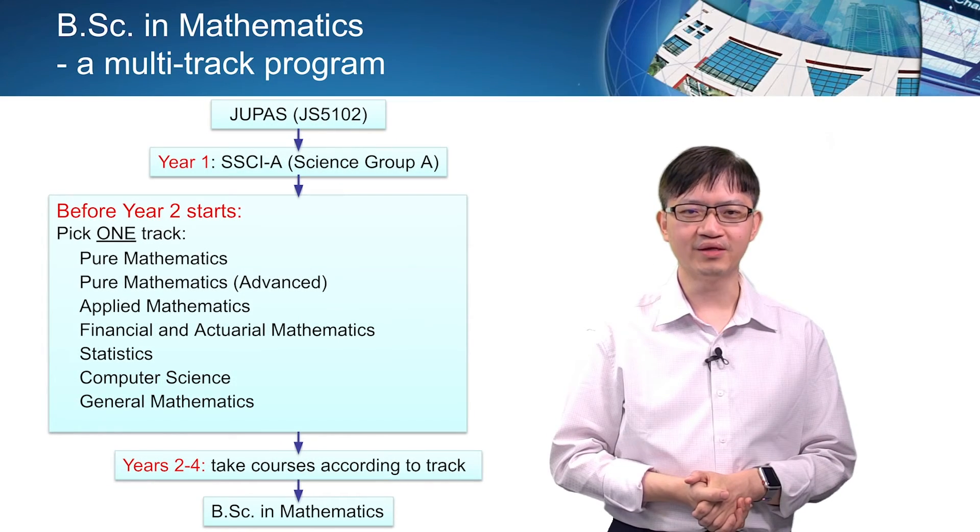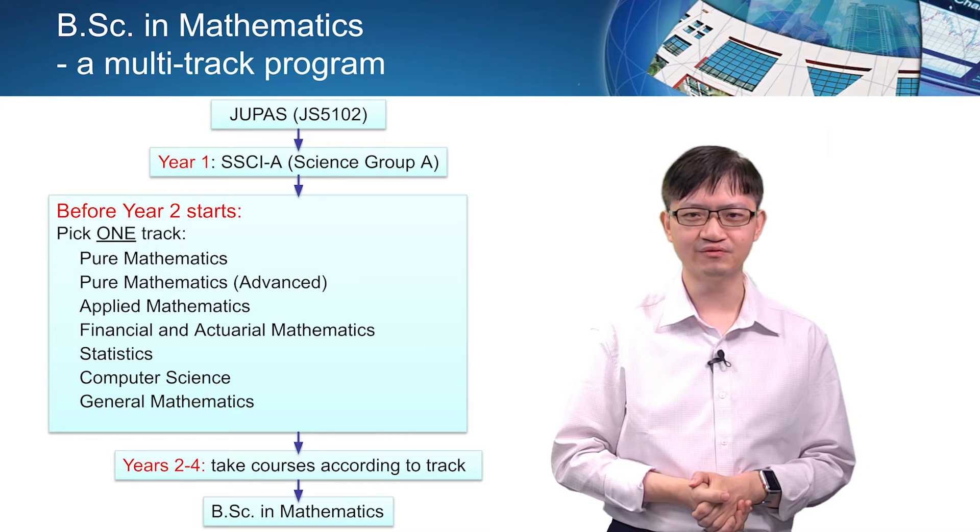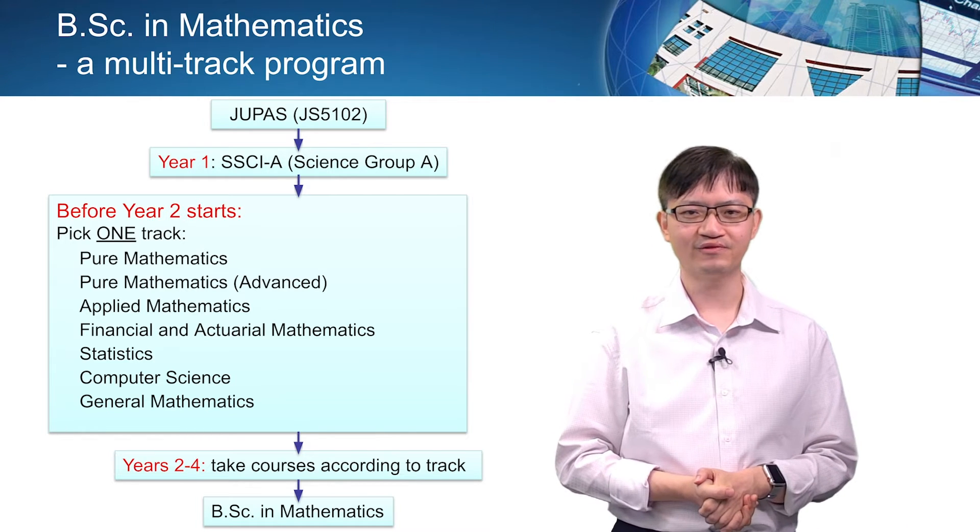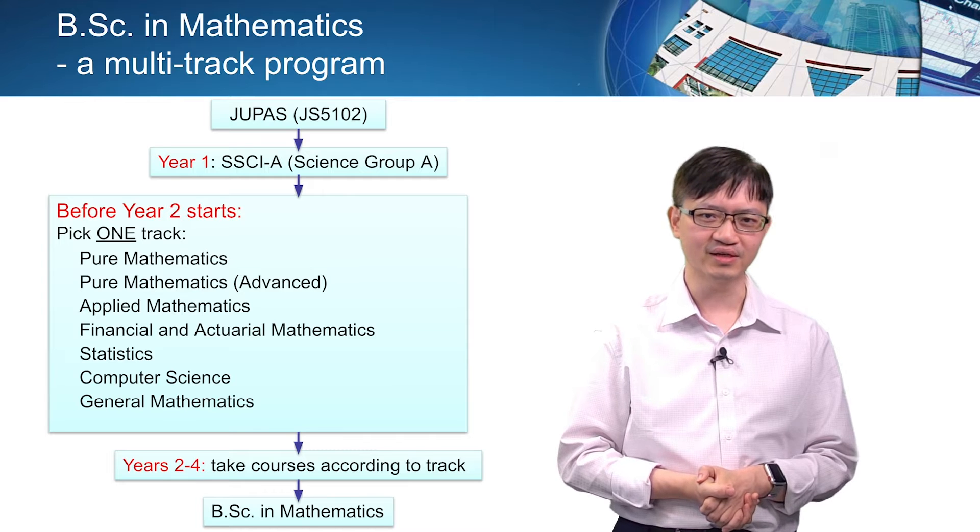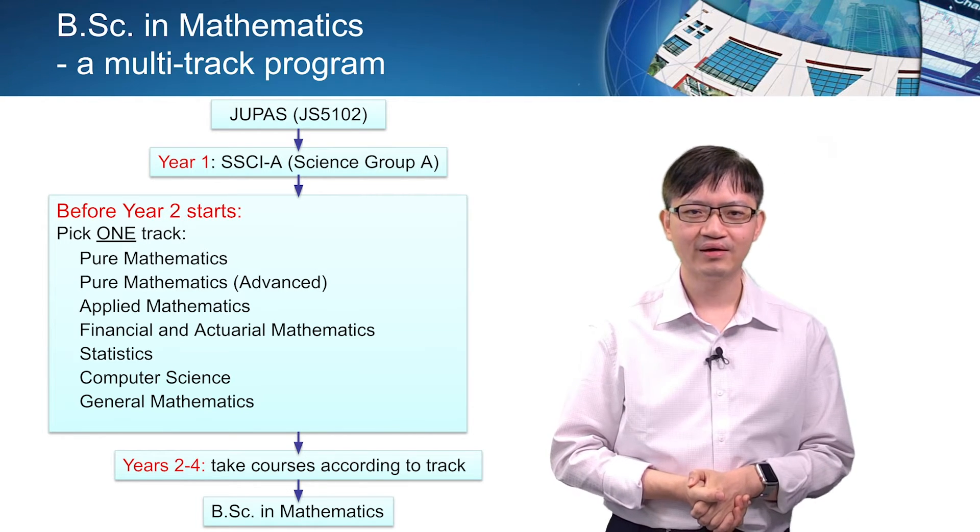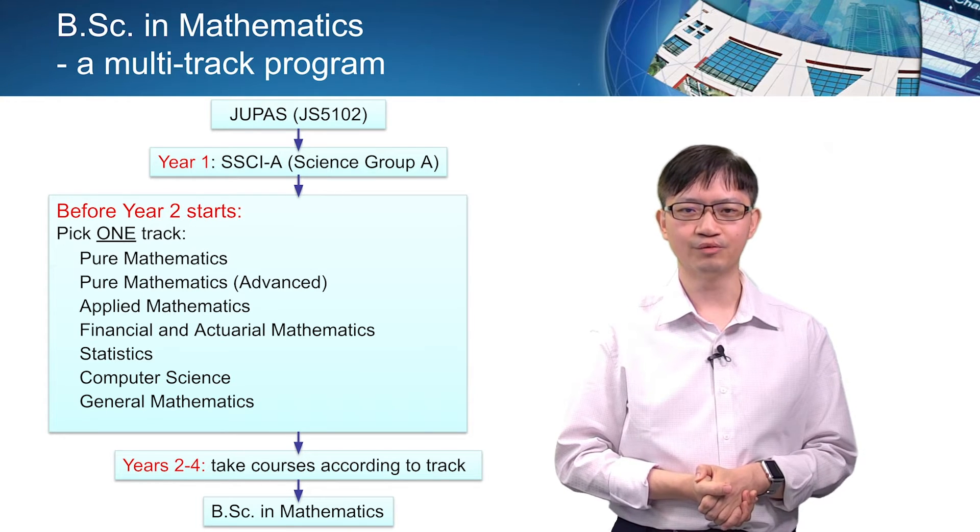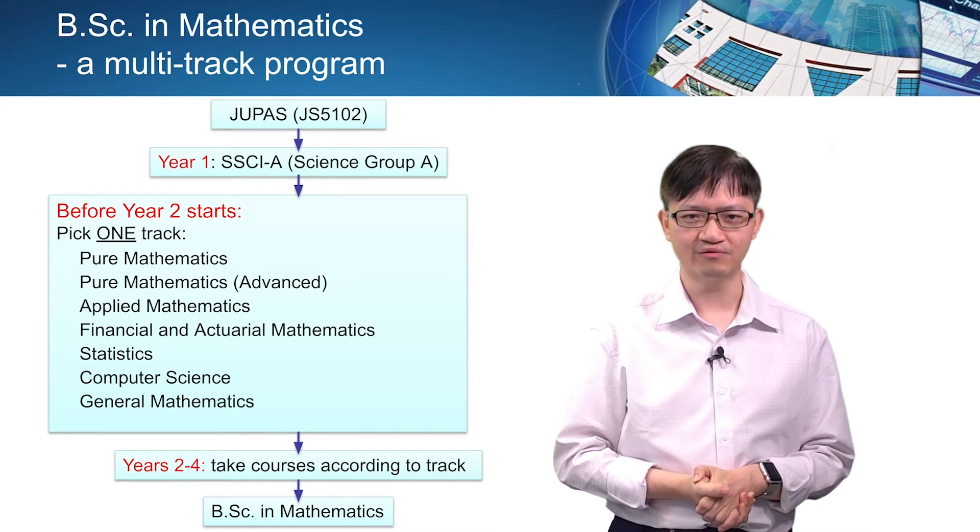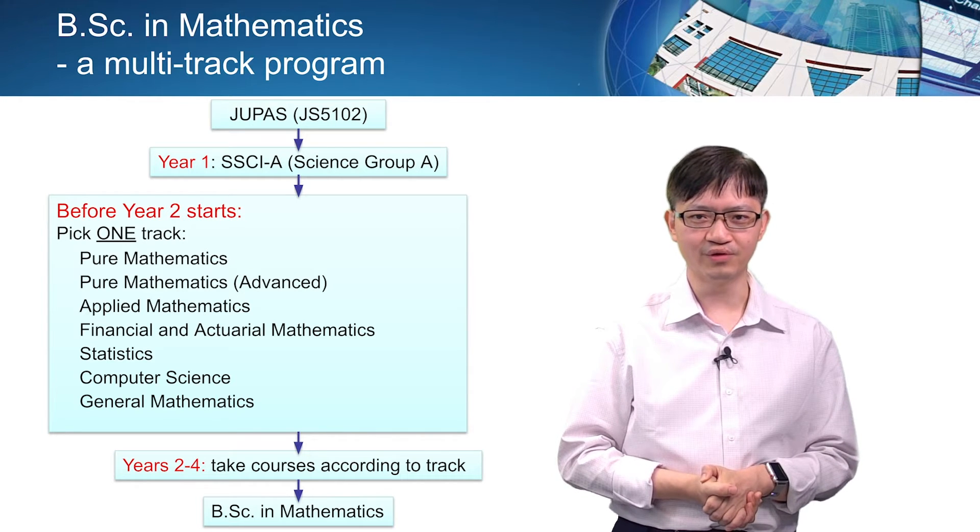The math program at HKUST is a multi-track program. After entering the School of Science through JUPAS, students will spend the first year studying common core courses that include math, physics, and chemistry. At the end of year one, they will declare their major, and if math becomes a major, then before year two starts, you will be asked to choose one of the tracks that we offer. They include seven tracks.